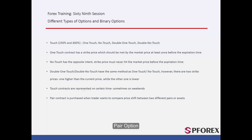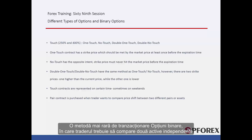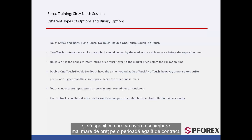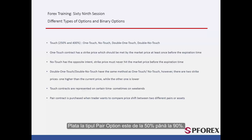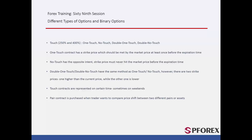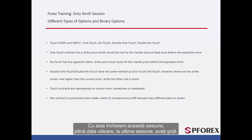Pair Option: A rare method of trading binary options in which a trader must compare two independent assets and specify which one would have a higher price change over an equal contract time. Payout of a pair option model is from 50% to 90%. That concludes this session. Until next time and the final session, take care.